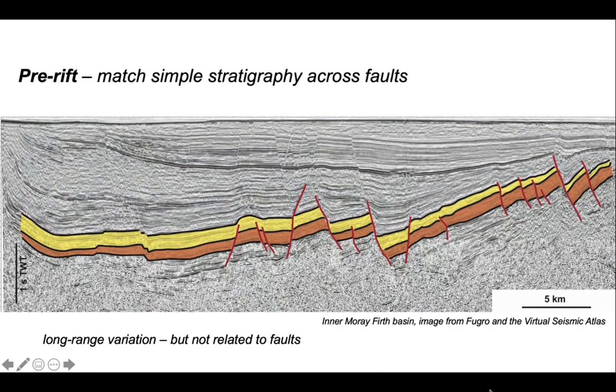Let's have a look at the pre-rift through there. You can see it's faulted but if you look at the thickness variations in these two units that we picked out, there is very little variation, the thickness is more or less maintained. The variations that do occur happen at a length scale that's greater than the individual fault blocks.